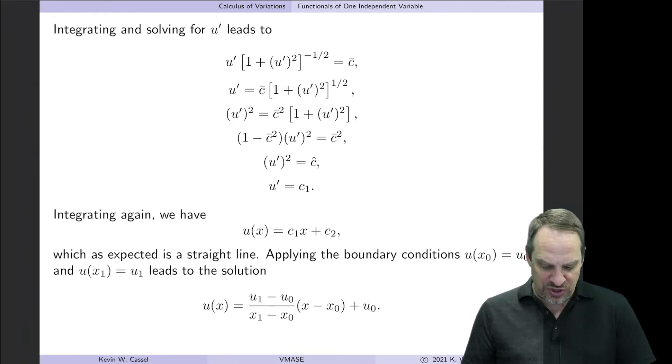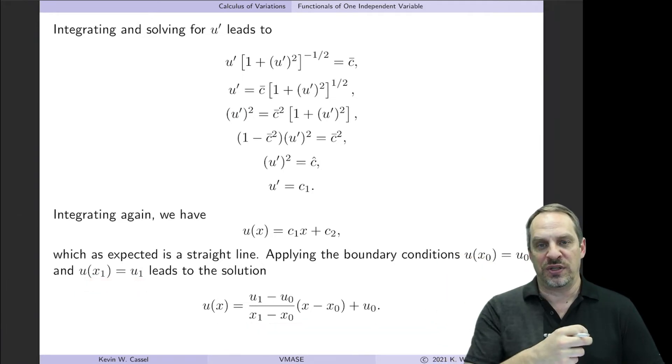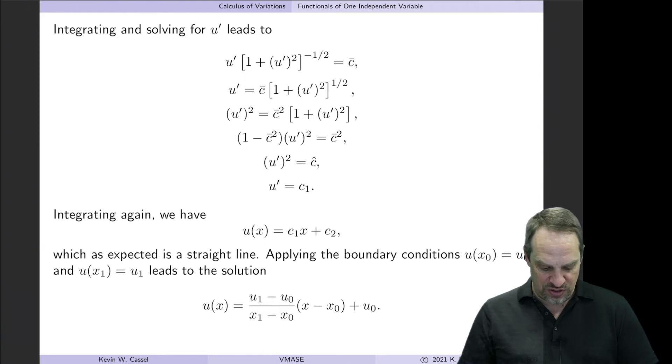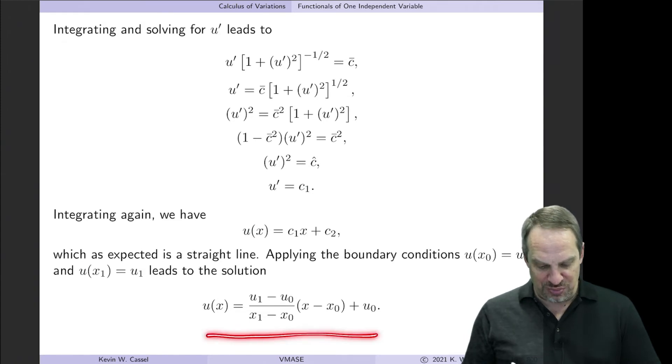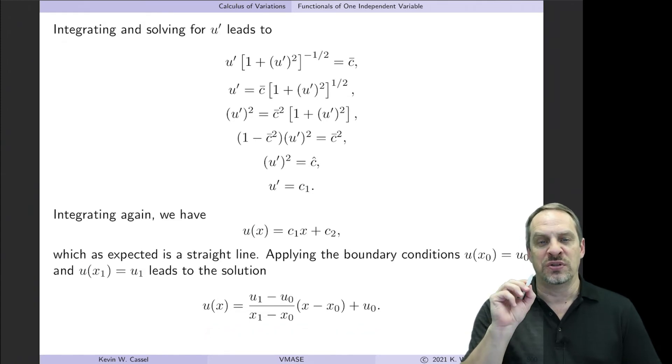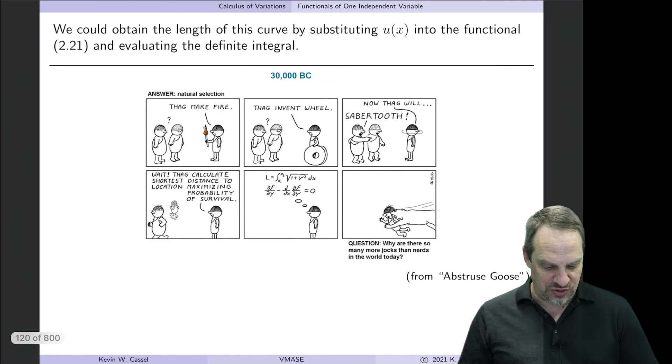Now at this stage, we can put in the boundary conditions as well and get the final expression that takes into account the starting location as well as the ending location of our curve. And that's what we get. We could then get the actual length of that curve by putting this expression back into the original functional, evaluating the definite integral, and getting the value of capital I. That capital I is the distance from the starting point to the ending point.